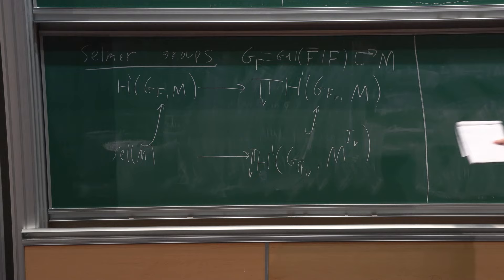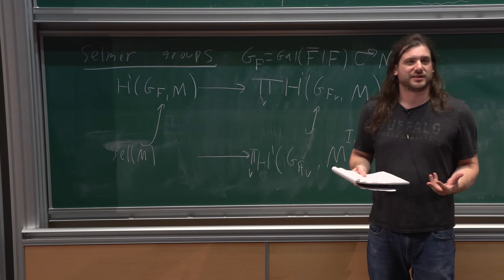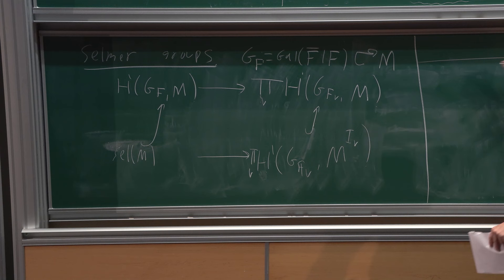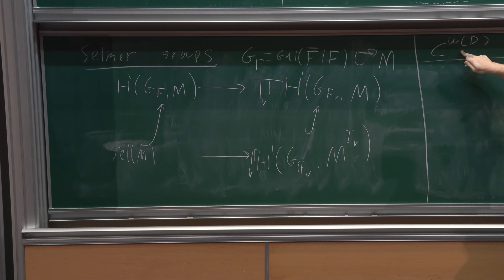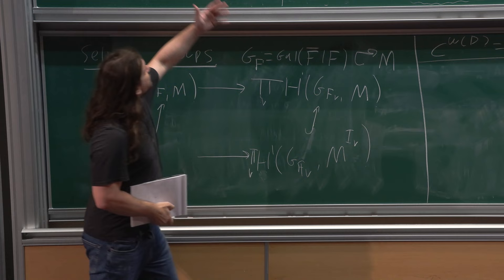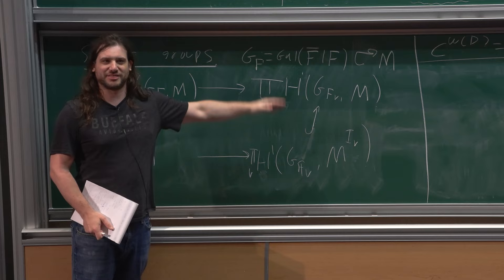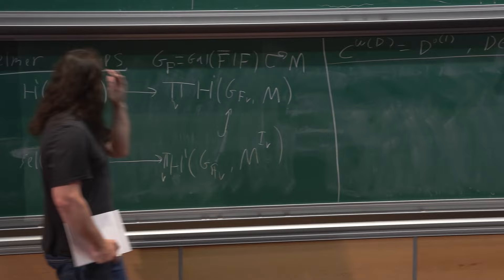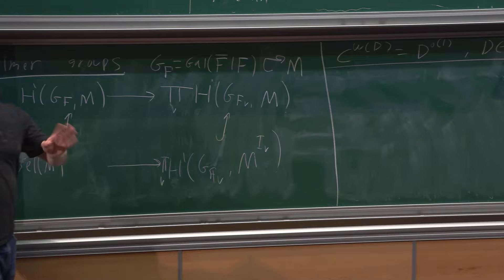The only meaningful choice is what to put at the ramified places, and for our purposes it really doesn't matter. It doesn't matter because of the inequality: if you take any constant raised to ω(D)—the number of prime divisors of D—this grows slower than any power of D as D ranges over positive integers. Because our measuring stick is powers of the discriminant, it's really irrelevant what you do at the ramified primes. So if this definition doesn't quite match the one you're used to, it probably doesn't matter for our purposes.